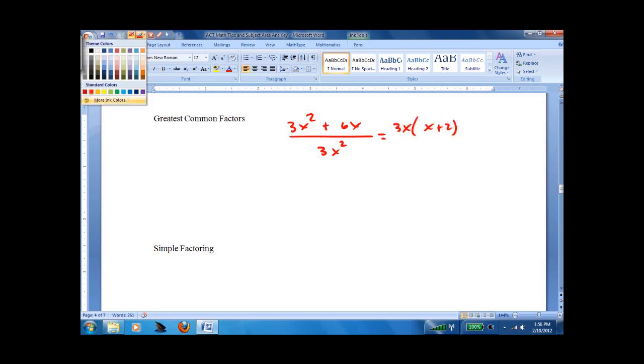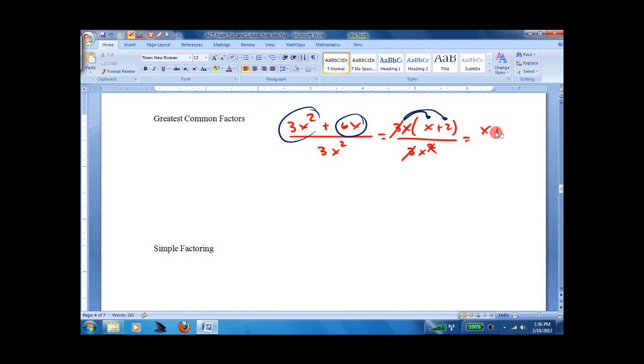And the way to look at this, if you're not sure, is to just distribute it. 3x times x is x squared, and 3x times 2 is 6x. And then the bottom's 3x squared, so you would be able to cancel and end up with x plus 2 over x. So that's the greatest common factor.